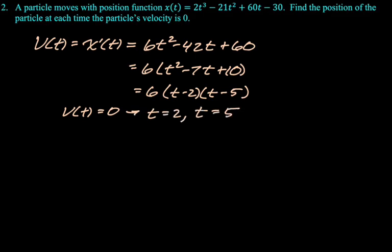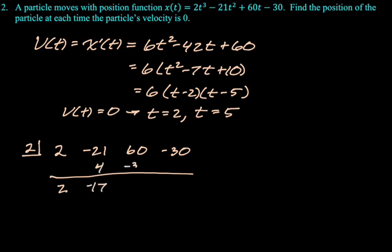So that's when velocity is 0. Now we need to find the position, which means we just need to plug these into the position. I'm going to take advantage of this opportunity to do some synthetic division. So 2 goes in the house and then 2, -21, 60, -30. Remember what we're looking for here is the remainder. So drop down, multiply, add down, multiply, add down, multiply, add down. The remainder, which is 22, is x(2). So the position at 2 is going to be 22.